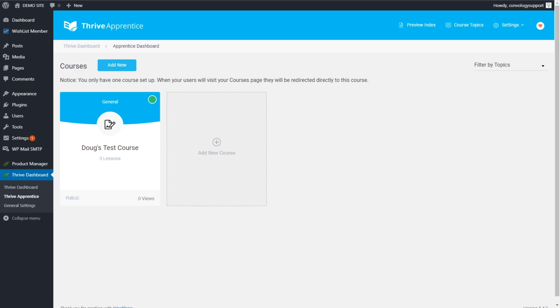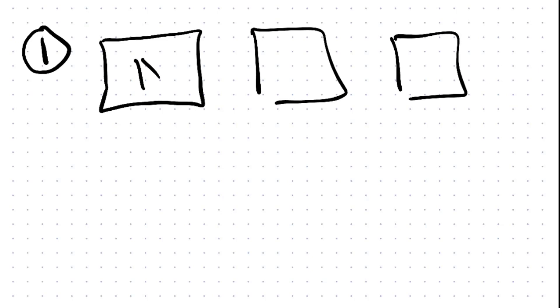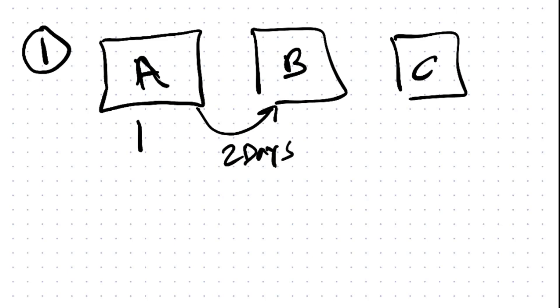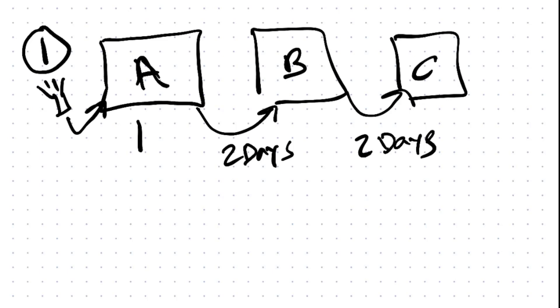First, let's talk about what it means to drip something out. There are really two definitions. The first definition: if you have three modules on your course — Module A, Module B, and Module C — people get access to Module A on day one when they sign up, then Module B two days later, and Module C two more days after that. We accomplish this by setting a delay between accesses on the courses.